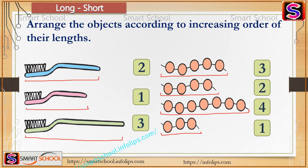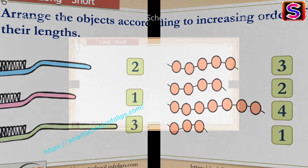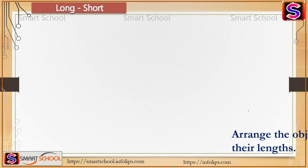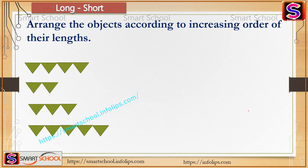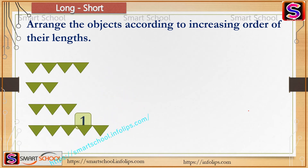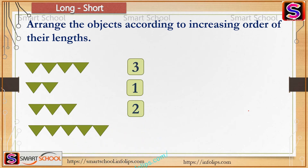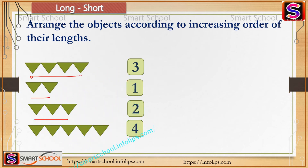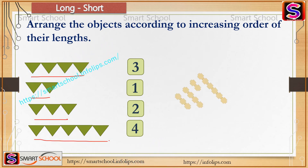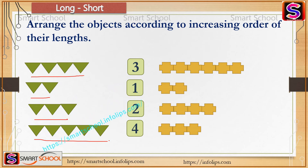Arrange objects in a triangular shape according to increasing order. The second will come first, third one comes second, first one comes third, and the last one comes fourth.